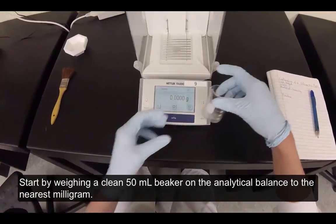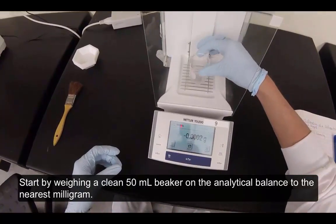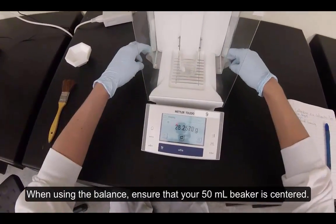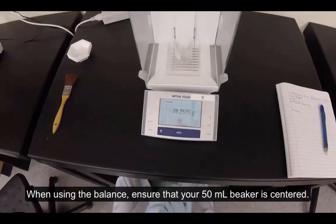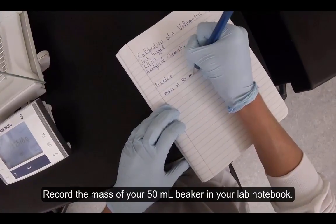Start by weighing a clean 50 milliliter beaker on the analytical balance to the nearest milligram. When using the balance, ensure that your 50 milliliter beaker is centered. Record the mass of your 50 milliliter beaker in your lab notebook.